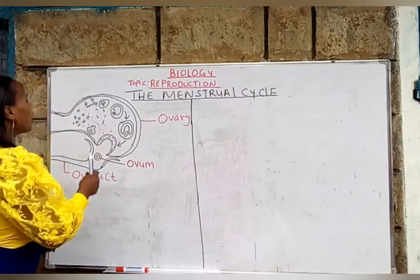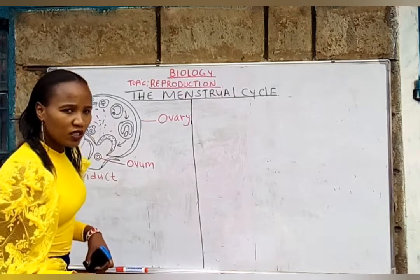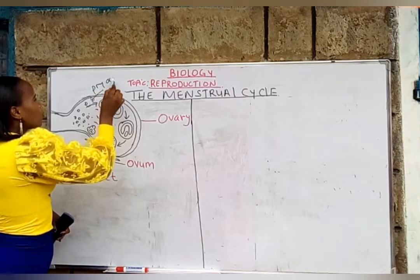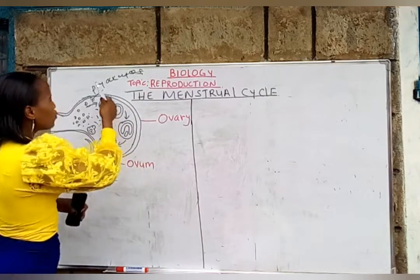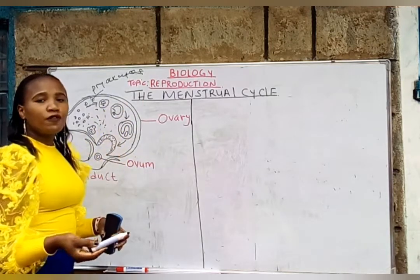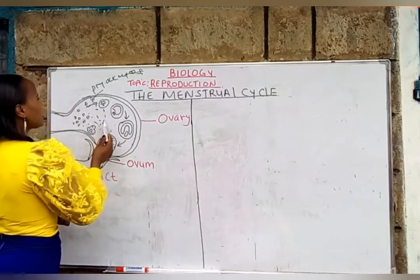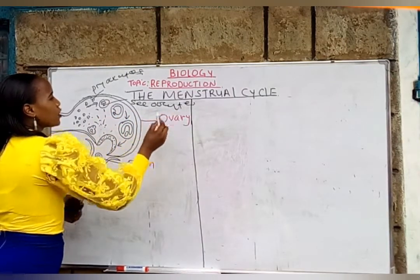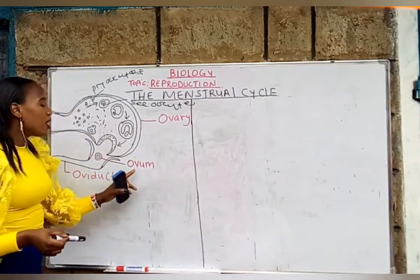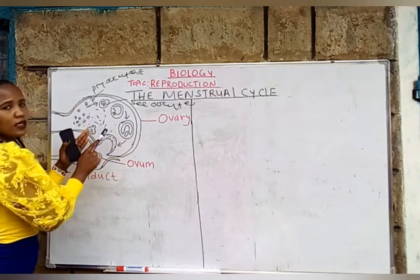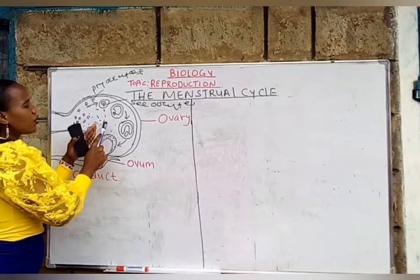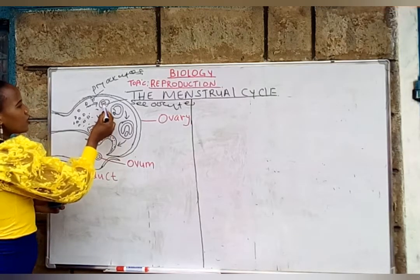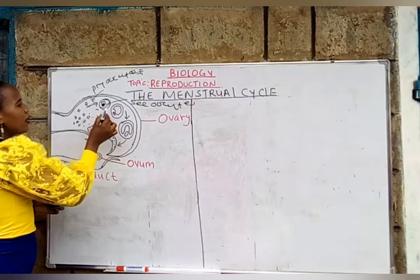Briefly, the oogonia undergoes mitosis — self-division — to form a primary oocyte. The primary oocyte undergoes some form of development to form a secondary oocyte. So the secondary oocyte is what we are talking about as the ovum. As the secondary oocyte moves to the center of the ovary, it undergoes further development whereby it becomes surrounded by follicle cells.